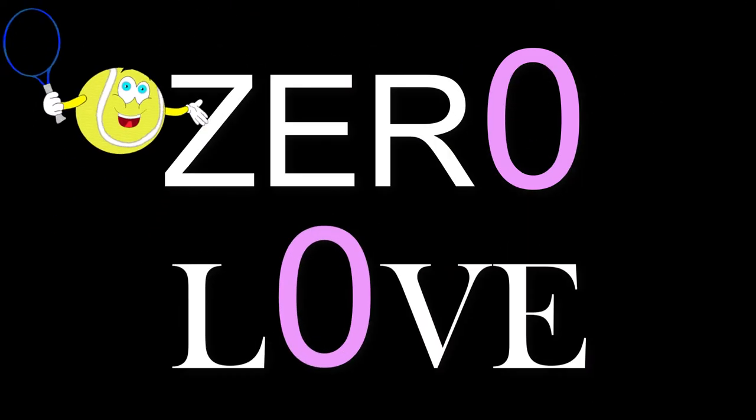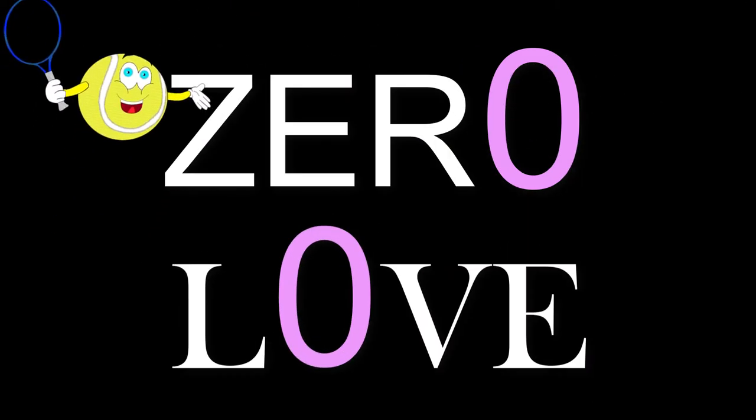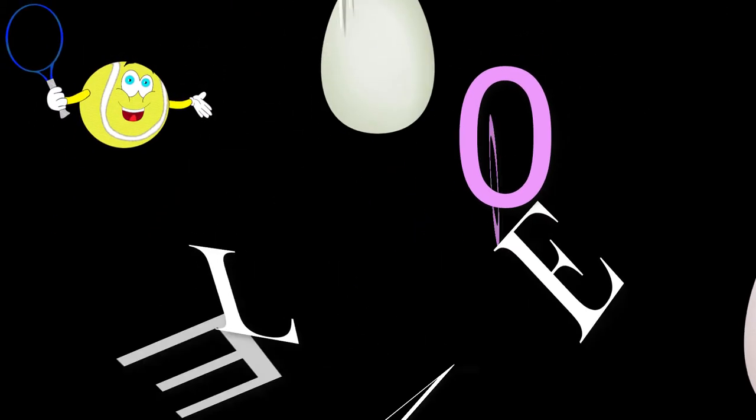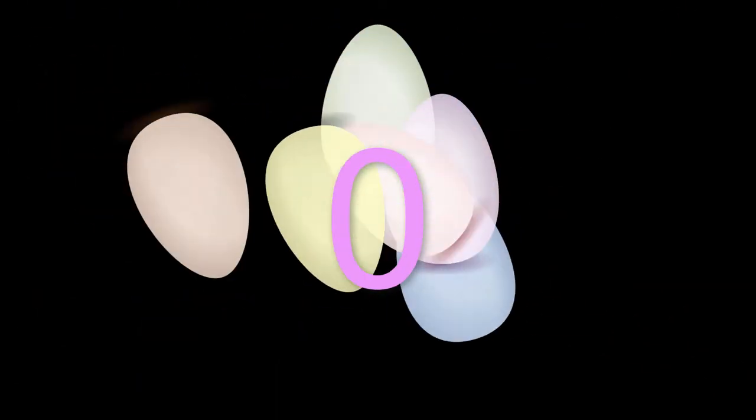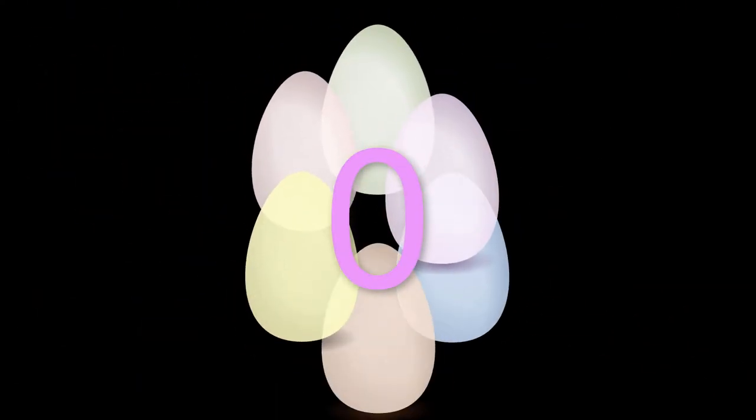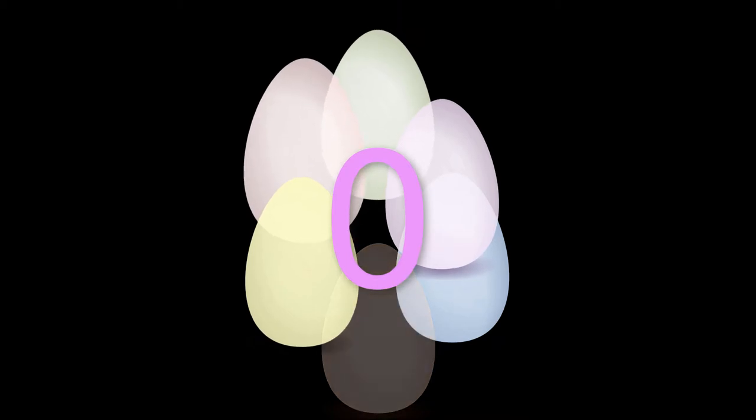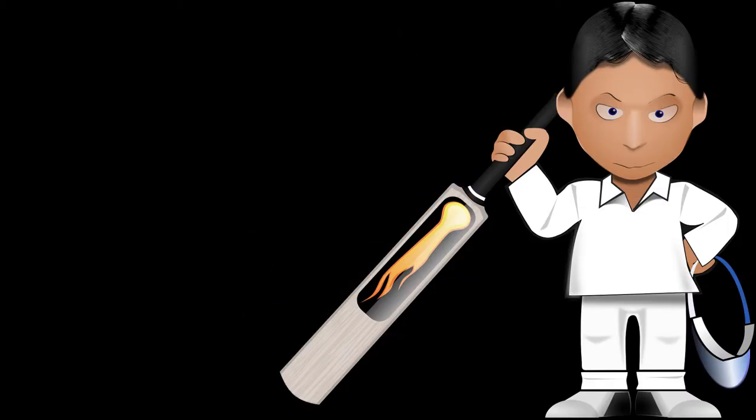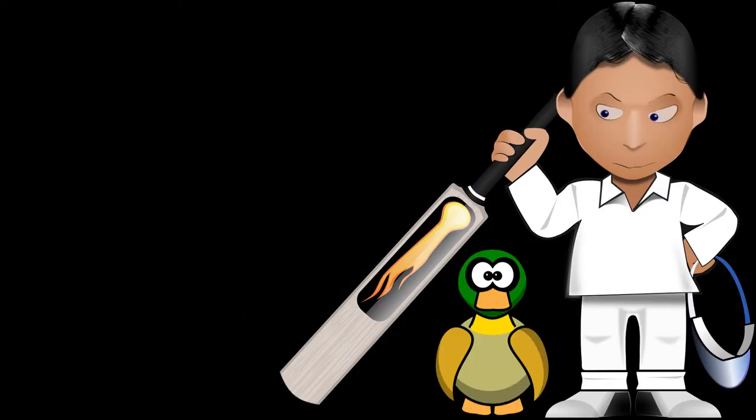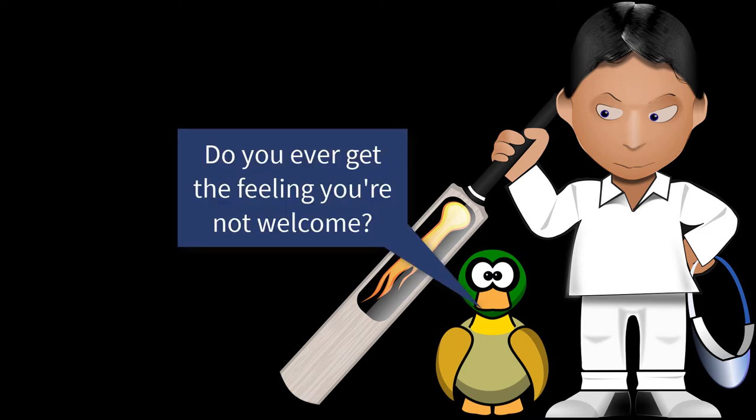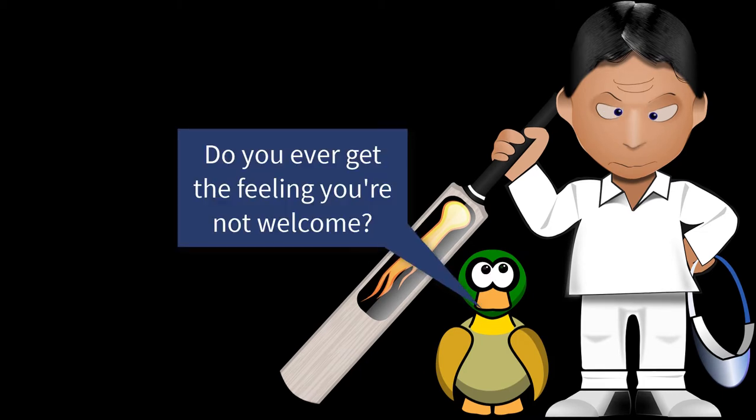In tennis, the word love means a score of zero. Why? It could be because in French, love means the egg, and in two dimensions an egg looks like a zero. Ridiculous? Maybe. But in the sport of cricket, a batsman who scores zero runs is said to have scored a duck, which is meant to be short for a duck's egg, the shape of which looks like a zero.